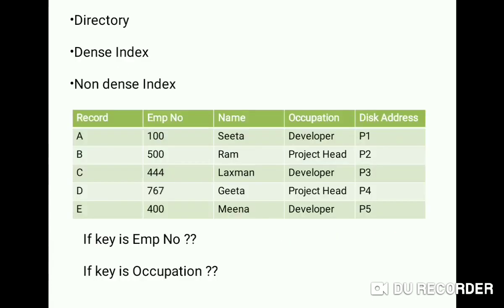A directory is a collection of indices. There are two types of indexes: dense index and non-dense index. If an index contains an entry for every record, it is called a dense index. When there is an entry for only some of the records, it is called a non-dense index.